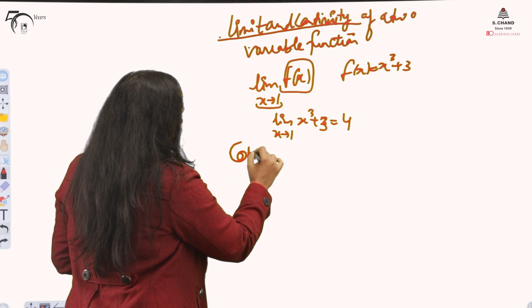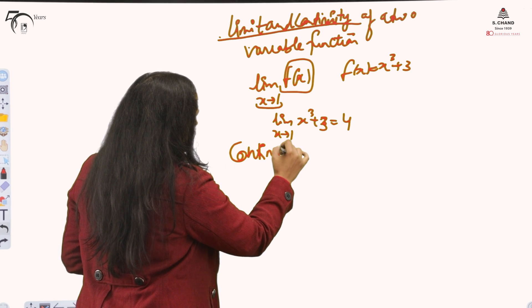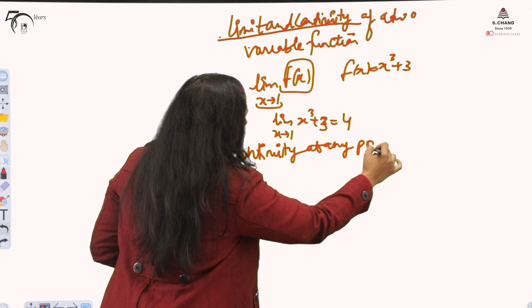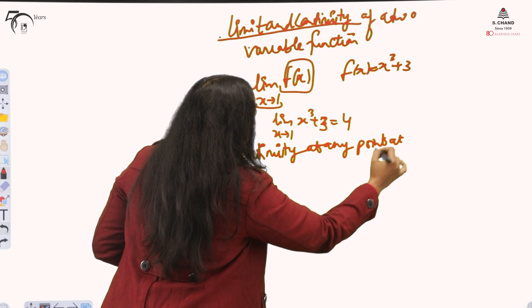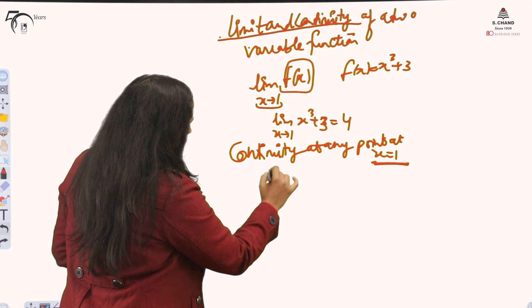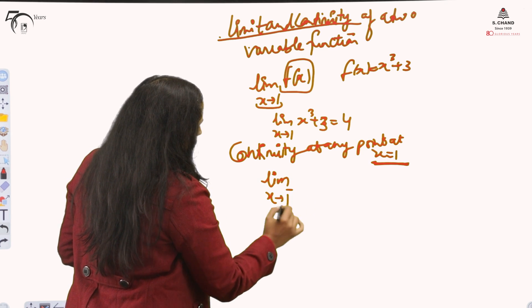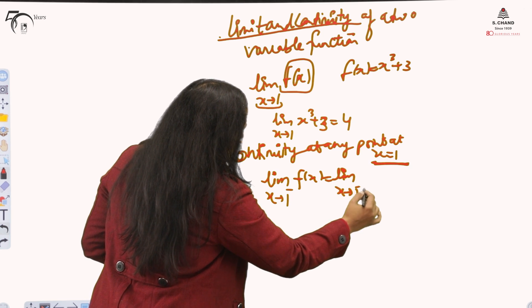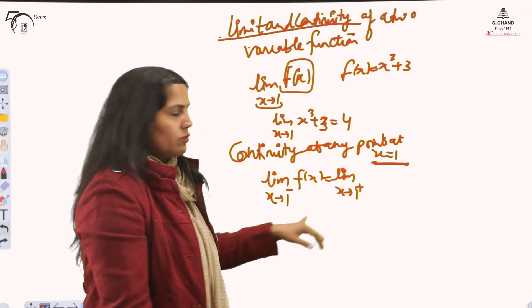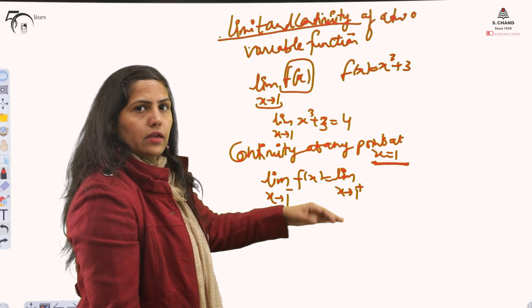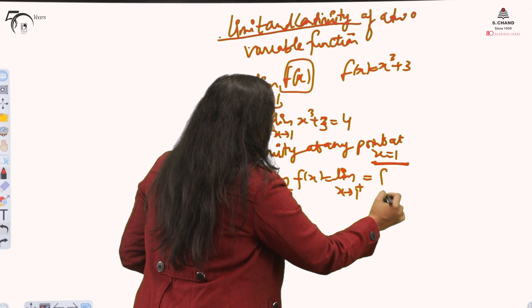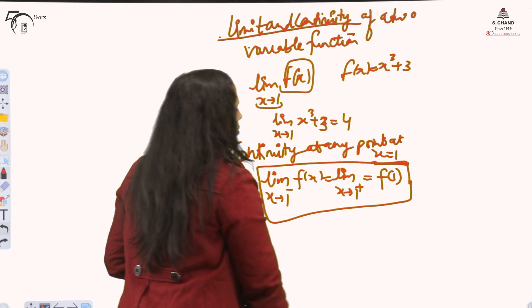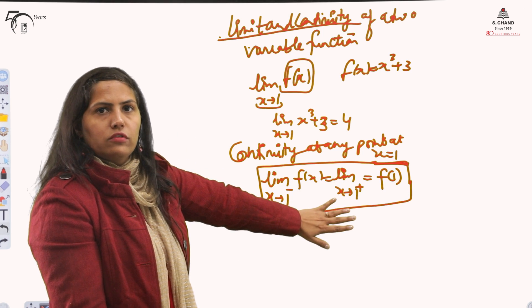And for continuity, for any point, continuity at any point, suppose I just check on this point only, at any point and at x equal to 1. What do you do? Limit left side, limit right side. This plus sign is indicating that the right side of plus 1 and minus sign is indicating that left side of the 0.1 and f of 1. If all these three values are same, then we say that there is no break or the function is continuous.